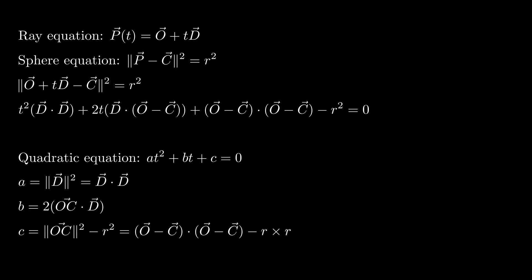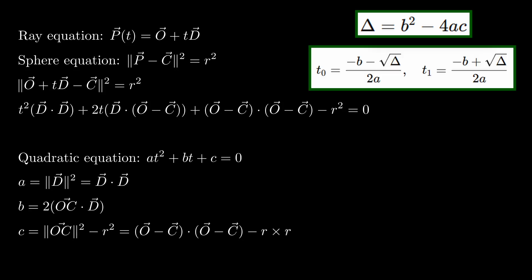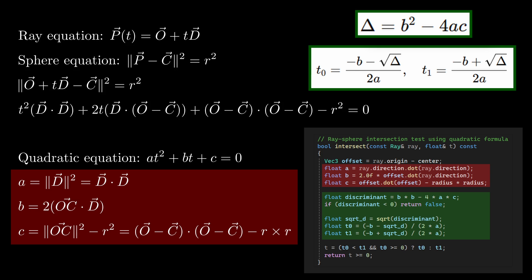These coefficients help us compute the discriminant delta, which tells us how many times the ray intersects the sphere. If delta is negative, the ray misses the sphere entirely. If delta is zero, the ray just grazes the sphere at a single point. If delta is positive though, the ray intersects the sphere twice, once when entering and once when exiting. Since we are only interested in the point where the ray first enters the sphere, we take the smaller of the two intersection values, T0 and T1, as long as it's not behind the ray's starting point.